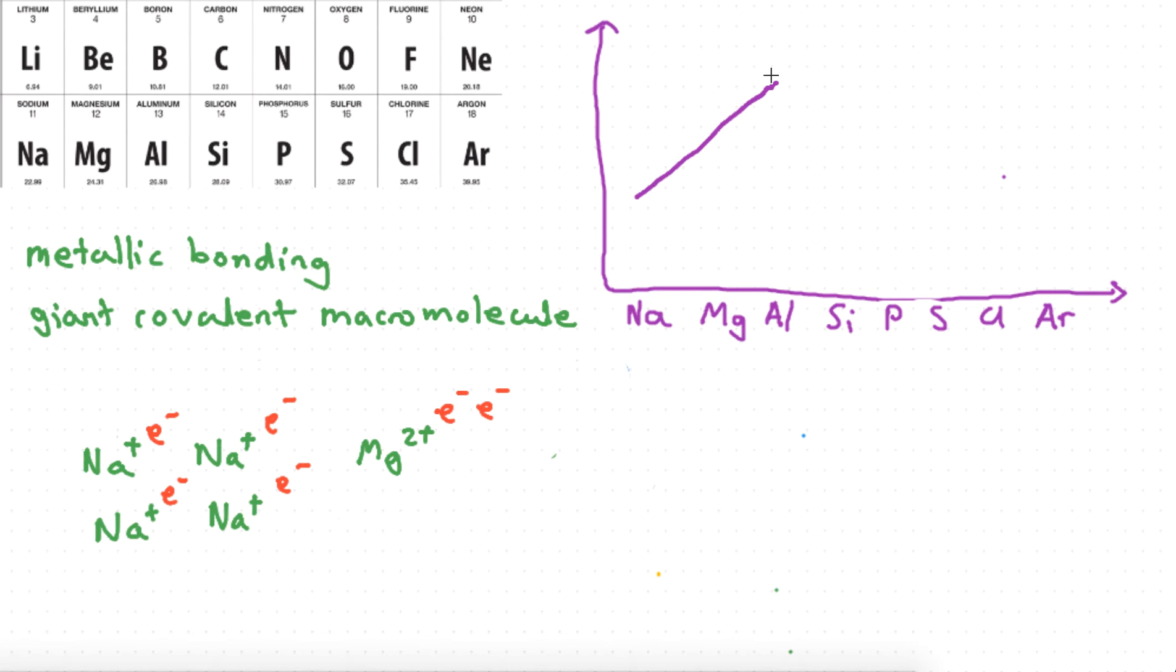But then silicon is slightly different. Silicon has a slightly less melting point, which is actually quite slightly less than aluminum. So let's just draw it like that.